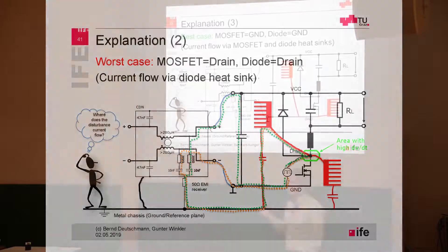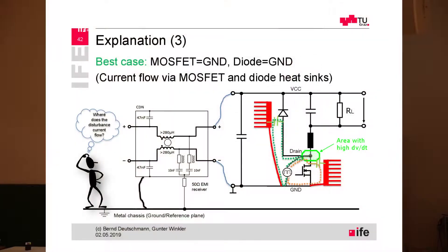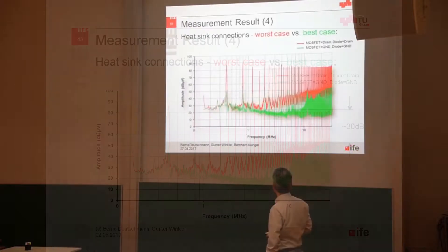It would be much better to connect the heatsink to a stable potential, in this case the reference signal return potential. This is mechanically not that easy because we have to isolate the drain of the transistor from the heatsink. We still have the coupling capacitor, but then we are shorting the energy transferred to the heatsink directly over this loop. There is still this coupling capacitor over the isolation, but then we are driving the currents only in a small loop area.